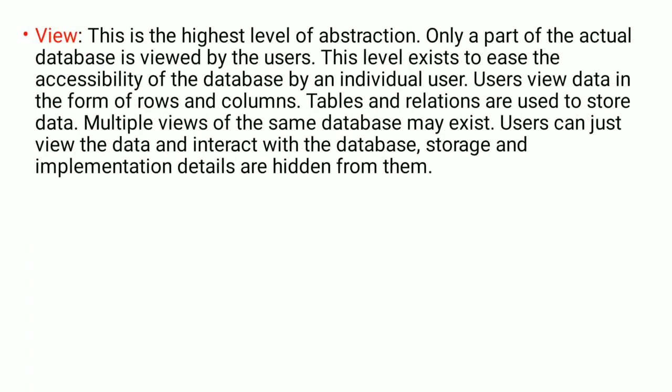The next level is the view level. This is the highest level of abstraction. Only a part of the actual database is viewed by the users. This level exists to ease the accessibility of the database by an individual user. Users view data in the form of rows and columns. Tables and relations are used to store data. Multiple views of the same database may exist. Users can just view the data and interact with the database, while storage and implementation details are hidden from them.